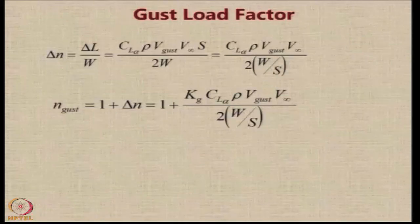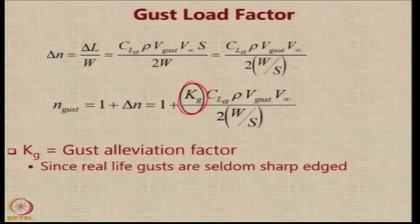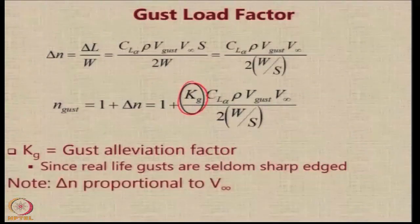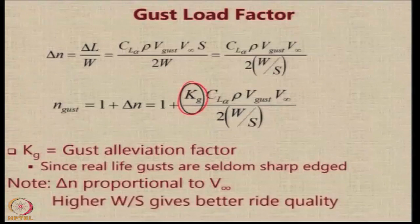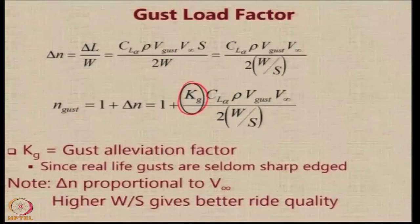The total gust load factor is the level-flight load factor of 1 plus delta n, multiplied by a factor kg, which accounts for the fact that real-life gusts are seldom perfectly sharp-edged but have some variation. Higher wing loading W/S gives better ride quality: a low-speed aircraft with very high wing loading will experience a lower delta n for a given gust velocity.